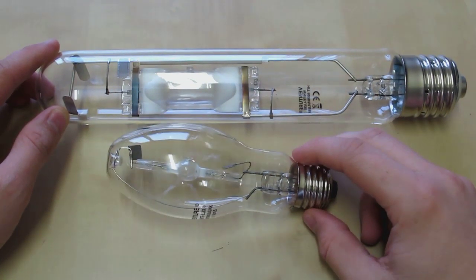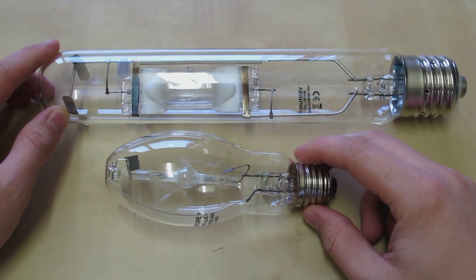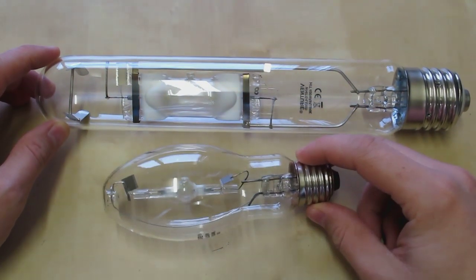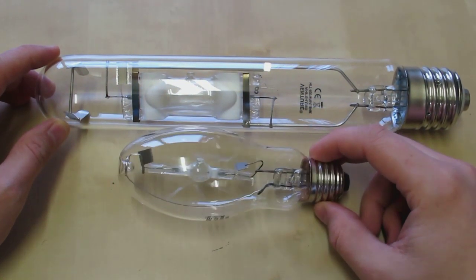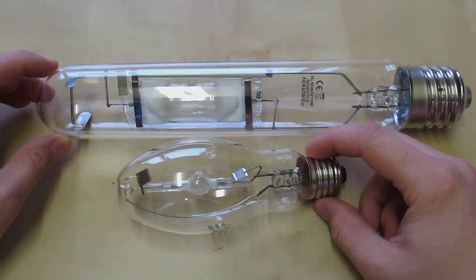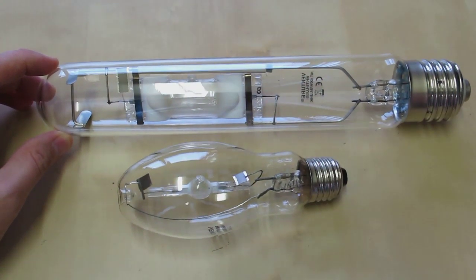Well for shits and giggles let's try a quartz metal halide on the incorrect gear. Obviously you can see the difference in the size between the two arc tubes. This will be interesting.